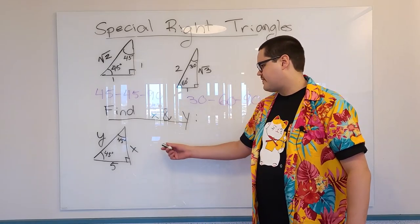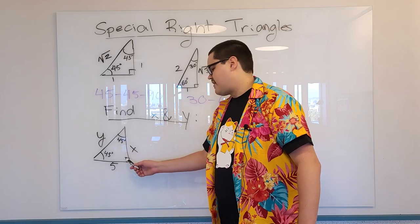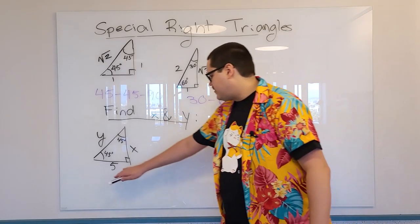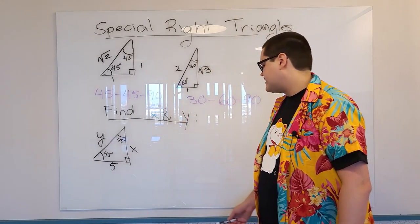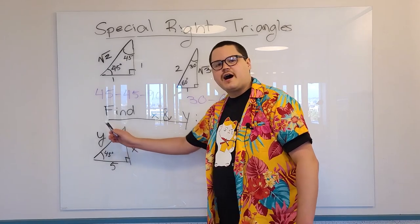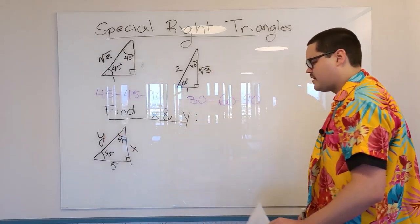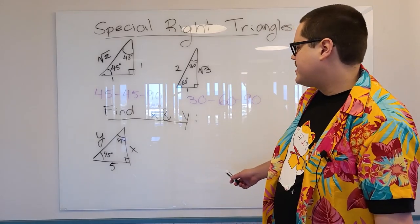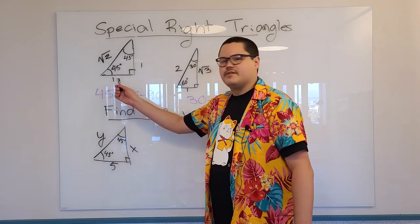Alright, suppose we're given this triangle here. It's a 45-45-90, and we're given only one of the lengths of the sides. We're only given this side as 5. Well, how do we find the other sides? How do we find x? How do we find y? Well, this triangle is not exactly the same as this triangle here. Because its length is 5 and this is 1. But they're similar.